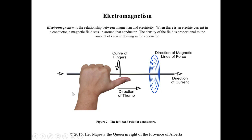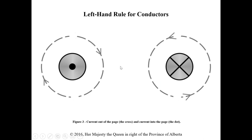For the left hand rule for conductors, your thumb of your left hand points in the direction of current flow and your fingers curl around the conductor in the direction of the magnetic lines of force. Using an arrowhead analogy: if the arrow is coming at you, point your left thumb toward yourself and you can see your fingers curl in the direction of those arrows, showing the direction of the magnetic lines of force around that conductor.